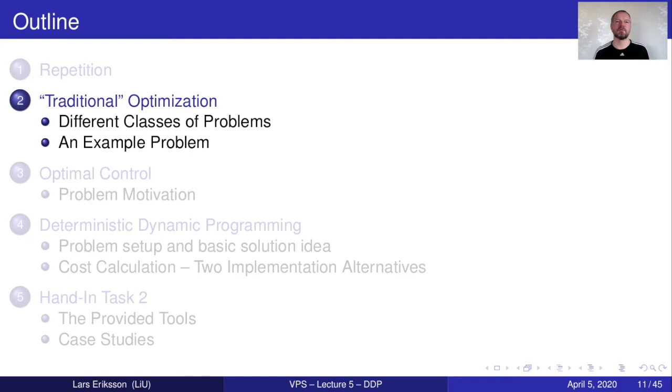Now we jump to the new material which will also be a little bit of repetition in terms of your previous education. So we'll look at traditional optimization. Then we'll come to optimal control which is presumably new for all of you. And finally we'll go to the tool that we will use in this course, deterministic dynamic programming. And this is as I've said the crown jewel of this course. Then we'll talk more about the details of hand-in task number two.